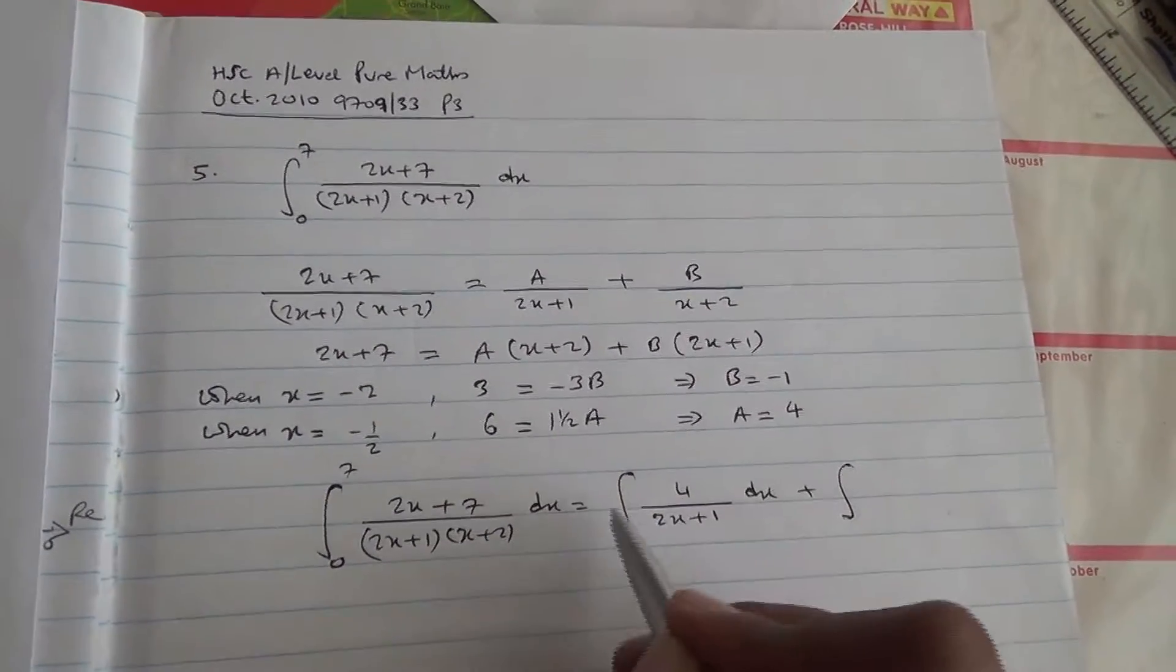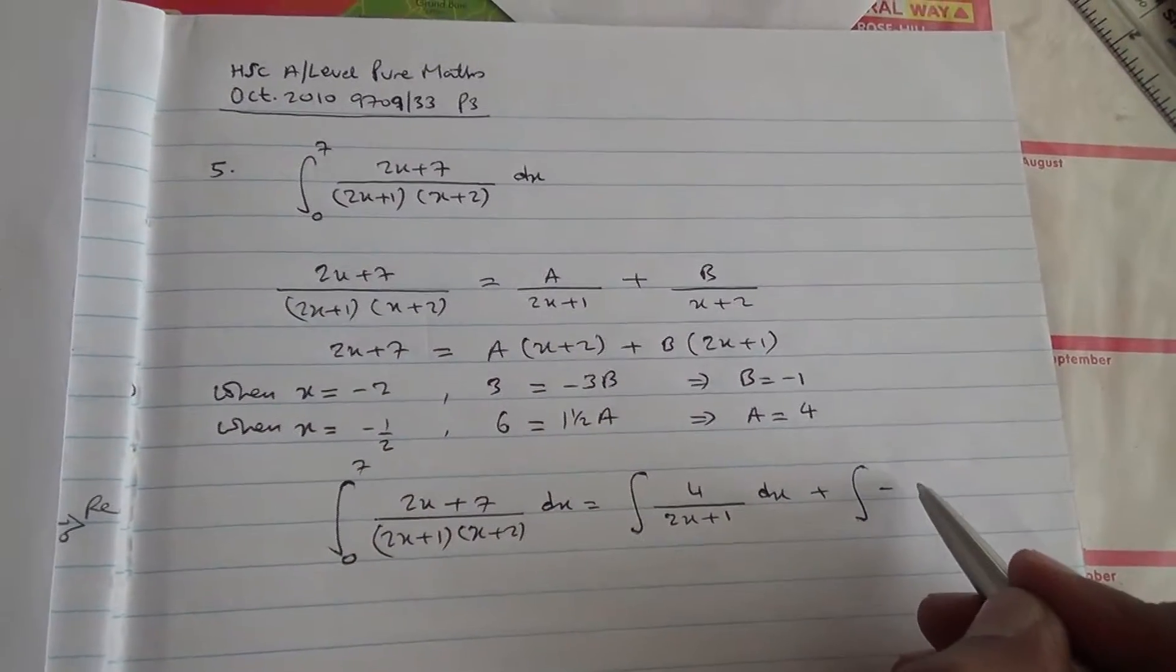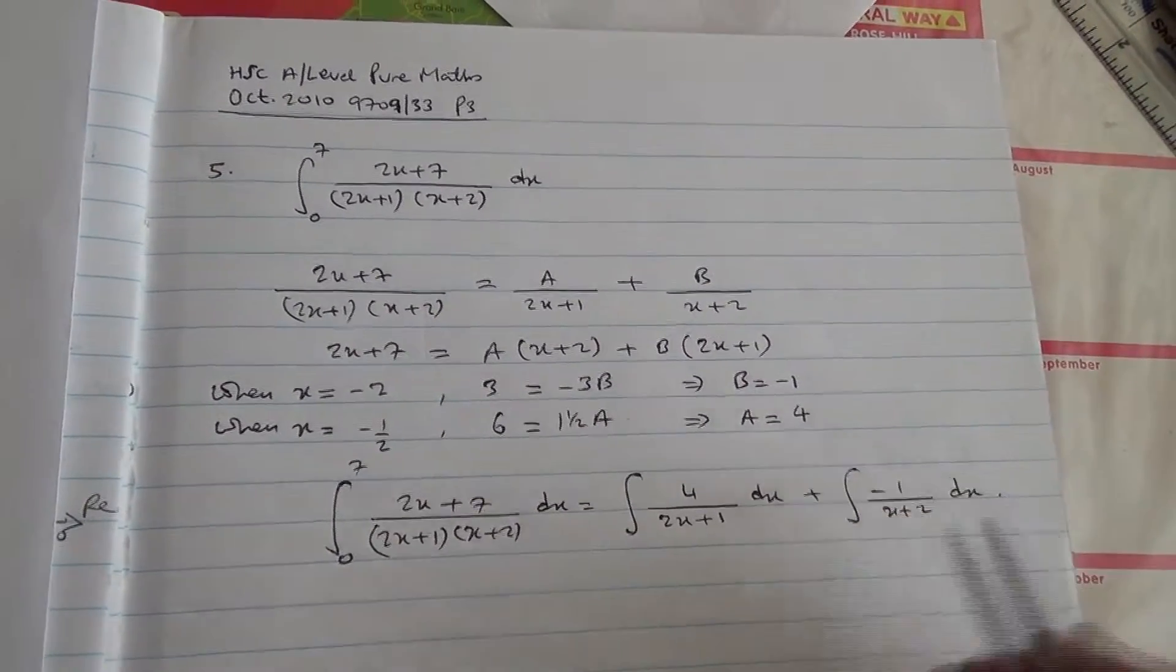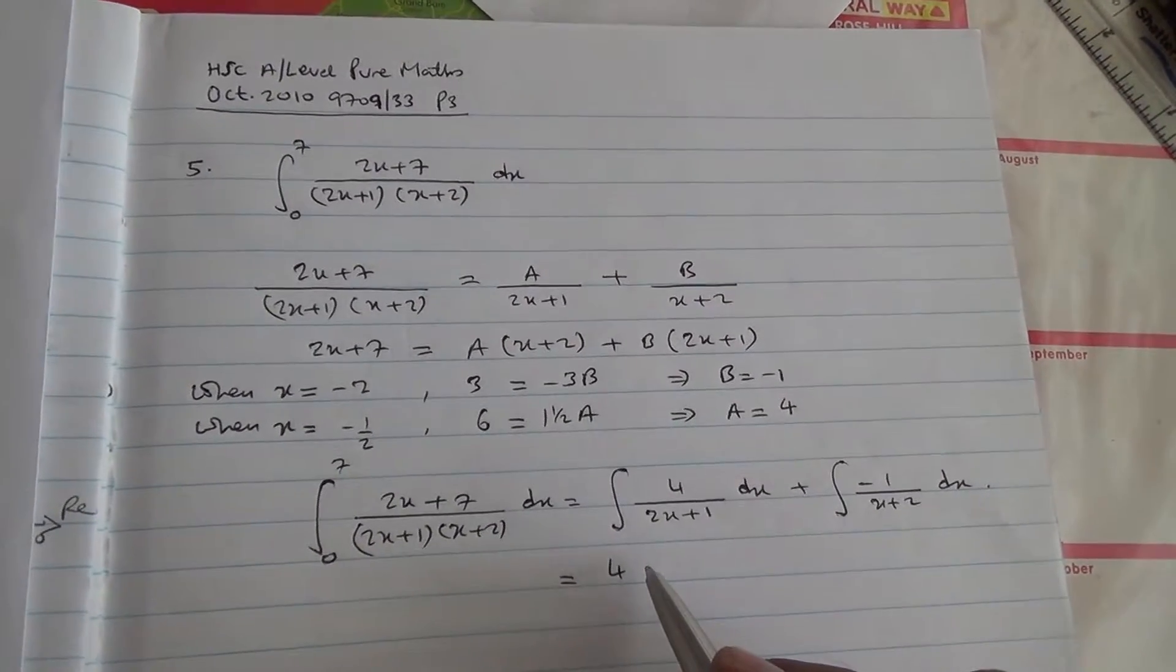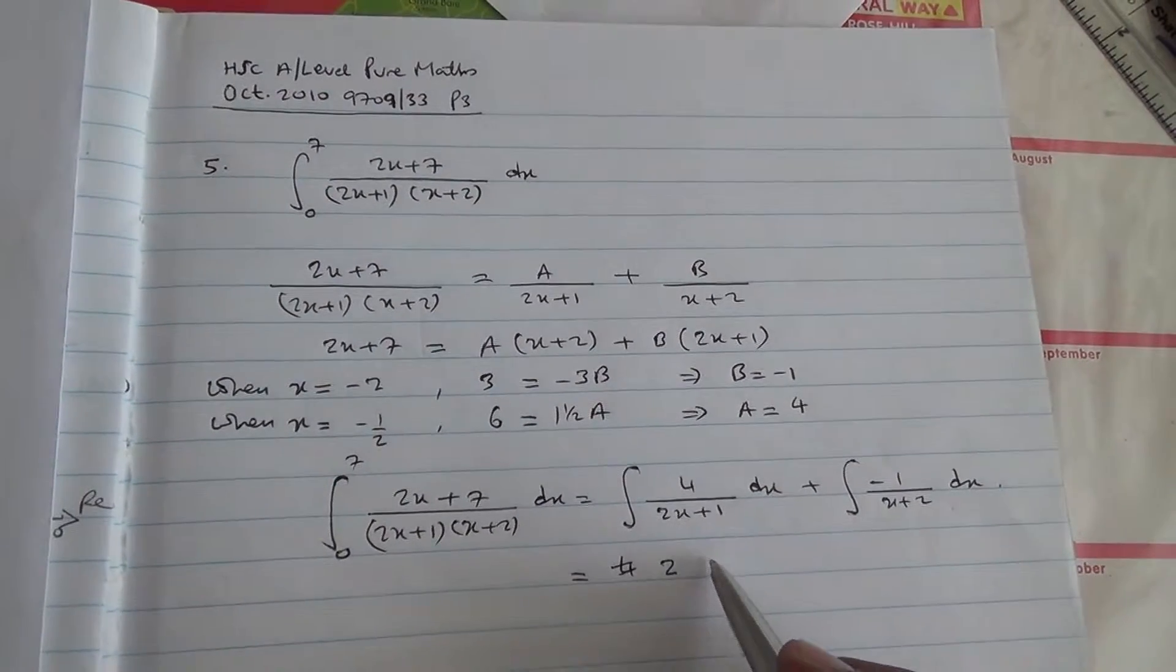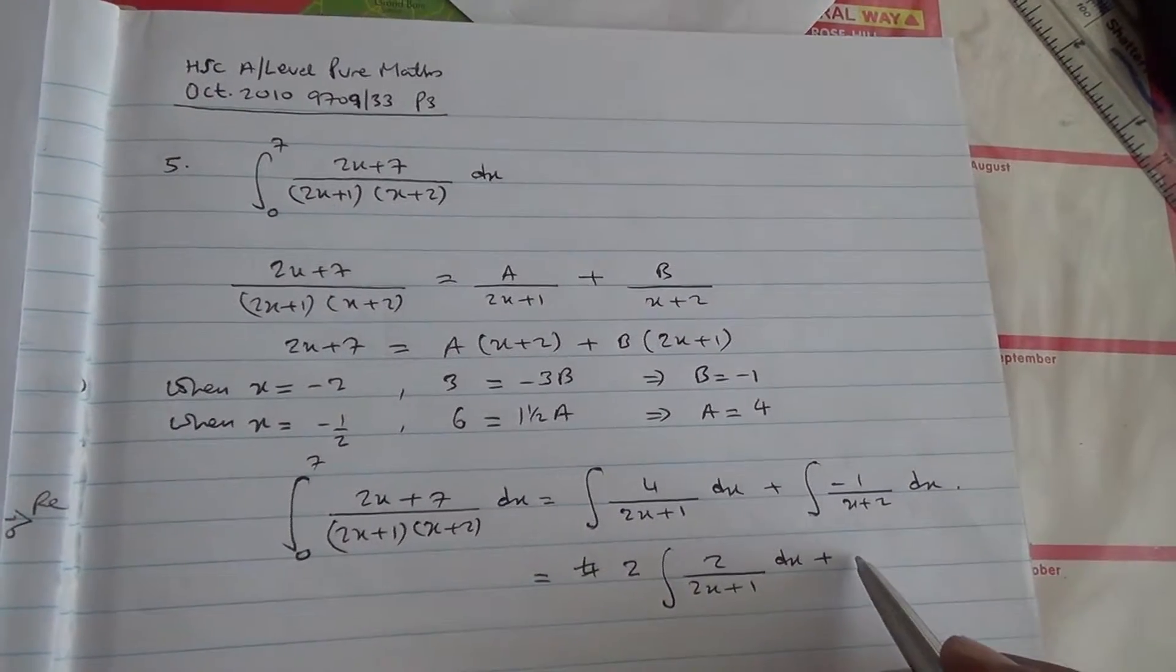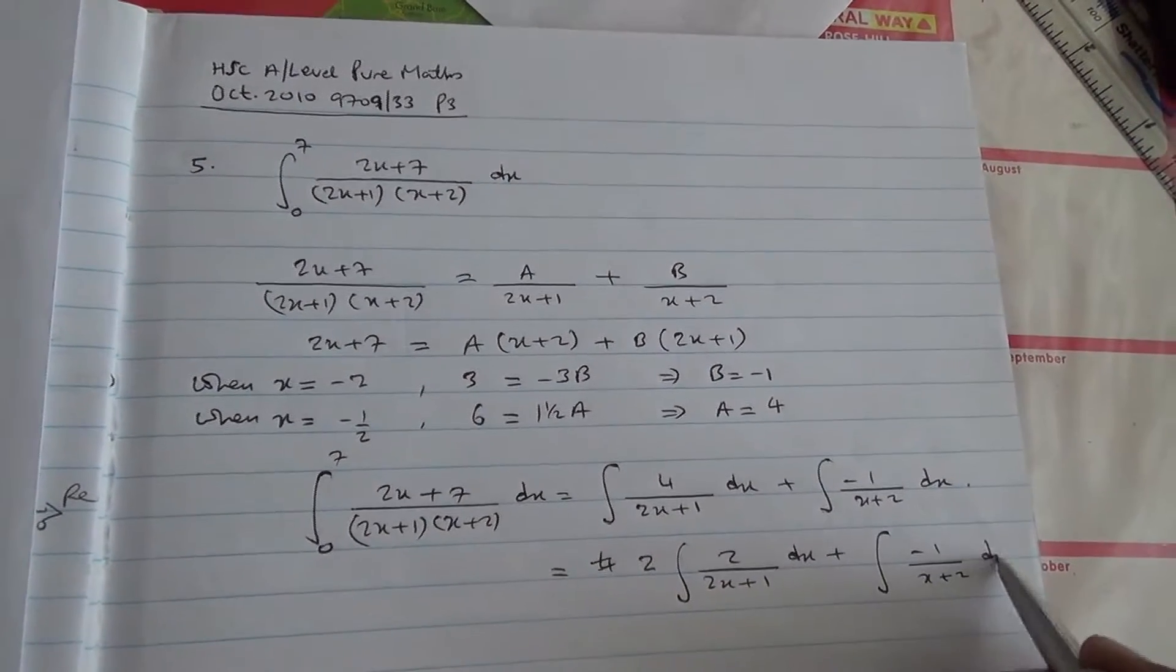Plus the integral over b, that is minus 1, over x plus 2 dx. Hence we have, we can put the 4 outside, but maybe you can put 2 outside and you leave 2 inside, so dx plus, here I get minus 1 over x plus 2 dx.